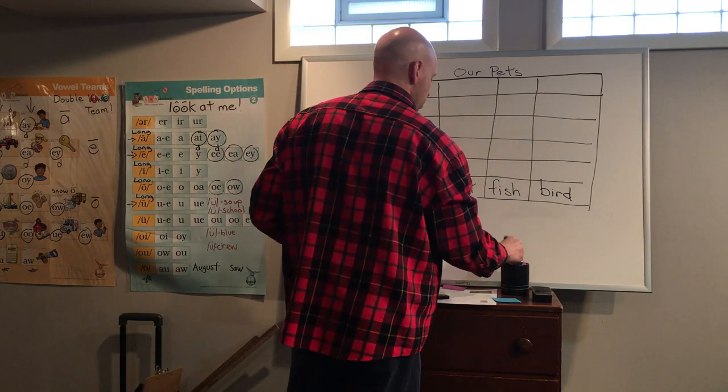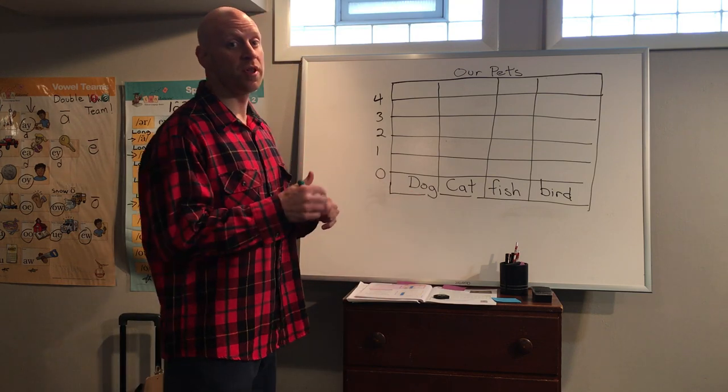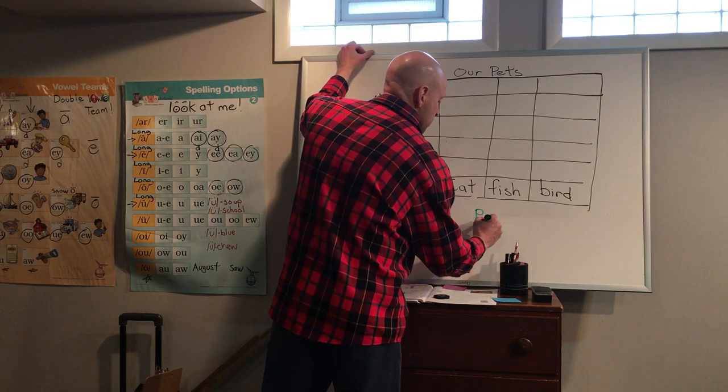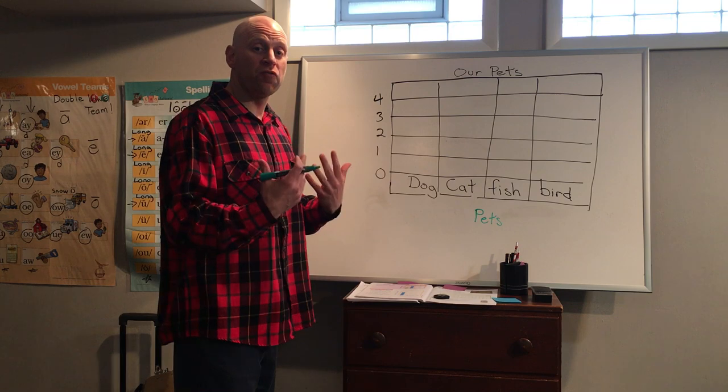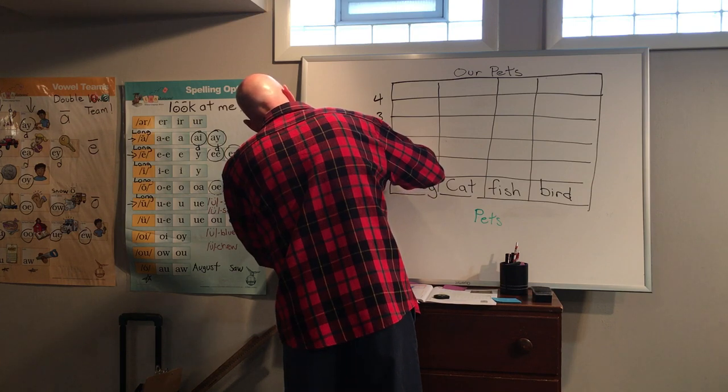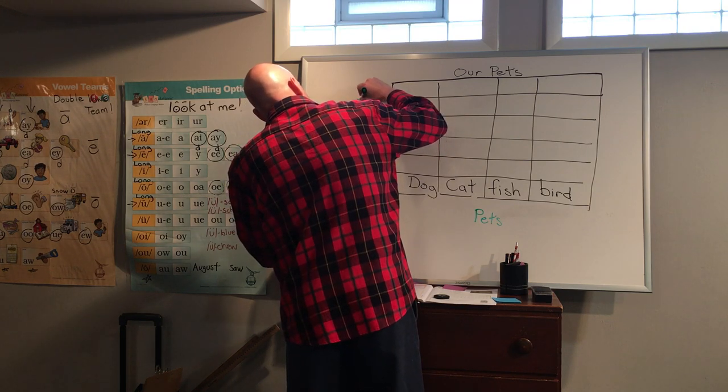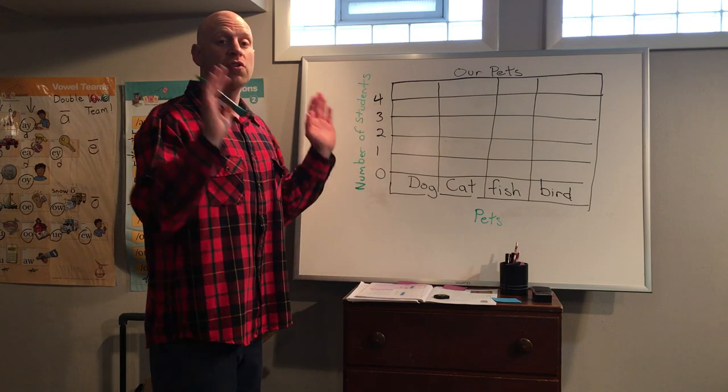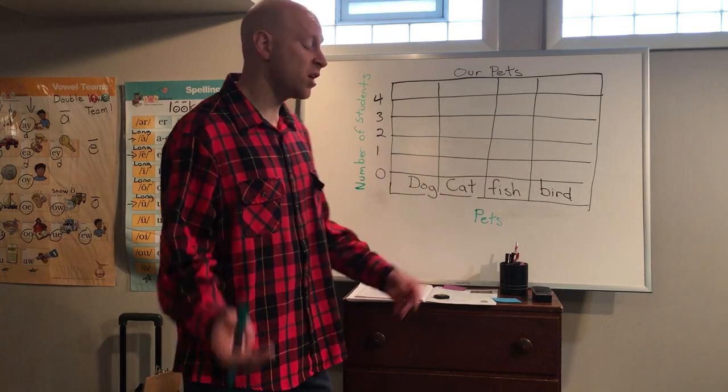Now we need to label each section of our bar graph. So we already have our title, our pets. Down here, simple label for this one would be pets or our pets. Well, in this case, let's just put pets or types of pets. We'll keep it simple. And then over here, if we're talking about our votes, we're going to talk about number of classmates. Let's shorten that. Students. It's kind of tricky to write it on the side like that, isn't it? So over here, these numbers are referring to the number of students who have that sort of animal. And down here, we have the list of the animals that we have.